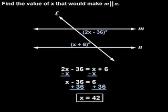So the value of x that would make line m parallel to line n is 42. We can check our answer by plugging 42 in for x in each angle, and we'll find that this value makes the angles congruent.